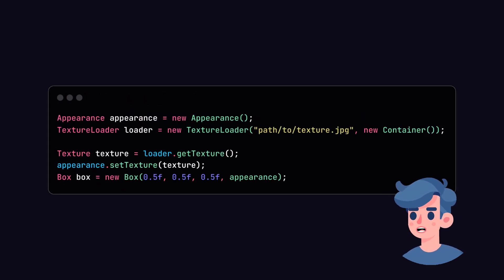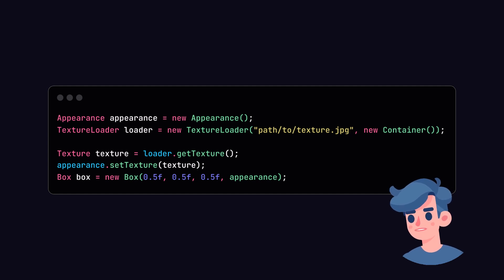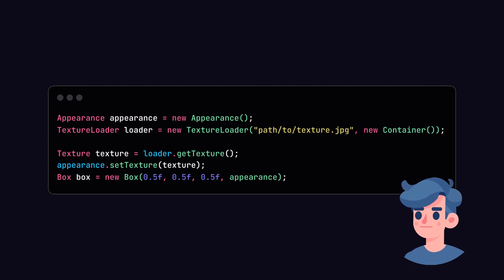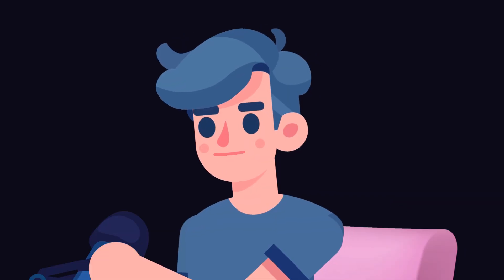At this point we've built a foundational 3D scene with interactivity. Let's also consider adding textures to our box — textures can significantly increase the visual appeal of your 3D objects. Here's how you can apply a texture to the box. Make sure to load the texture image correctly and apply it to the appearance of the box.